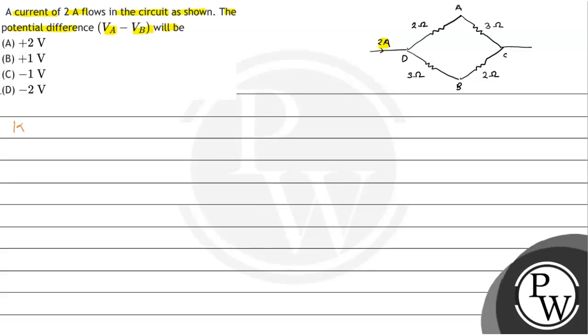So, this question's key concept will be simply Ohm's law. Potential difference, that is V, equals I (current) times R (resistance).